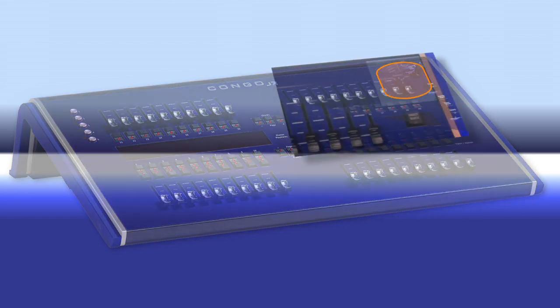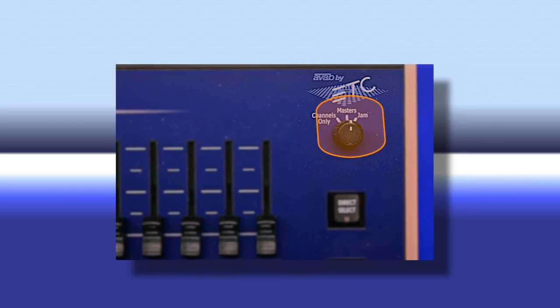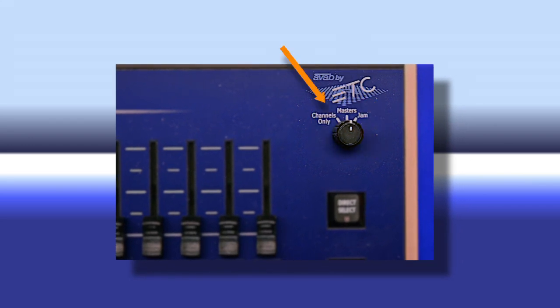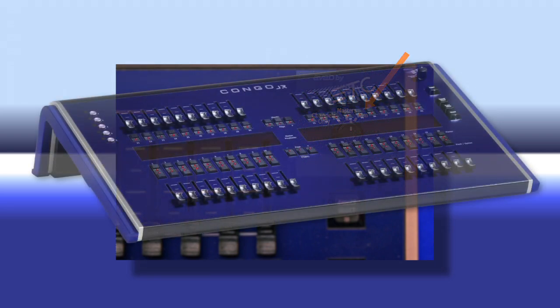The entire master playback wing can be switched between three different modes: Masters, which is where we'll spend most of our time; Channels Only, which remaps all the faders to direct one-to-one channel control; and Jam Mode, which is used for live events and busking.